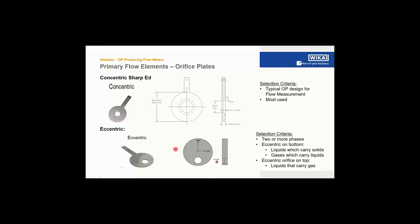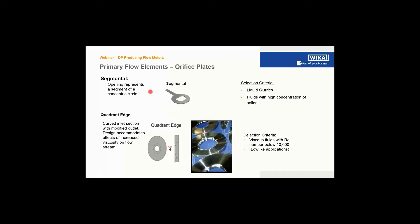The eccentric orifice plate is used when the fluid stream is not 100% one fluid only. In applications where liquids carry solids or gases carry liquids, the eccentric bore is moved down, allowing solids and liquids to pass through rather than being held back upstream. For liquids carrying gases, the bore can be moved upward, allowing gases to pass through as well. Another type is the segmental orifice plate — a section of a circular orifice plate used for slurry measurement and fluids with a high concentration of solids.